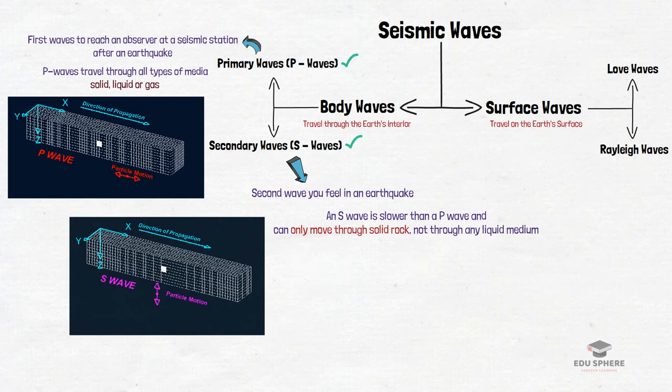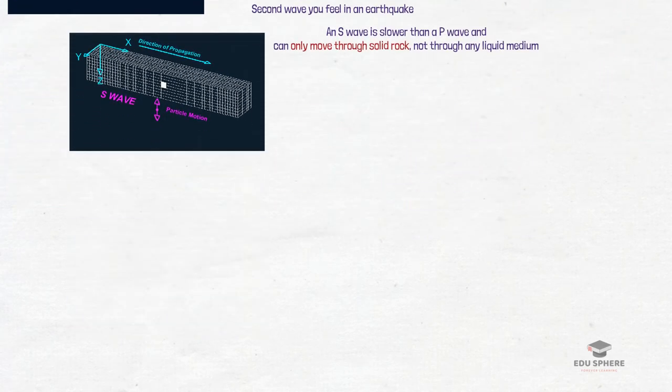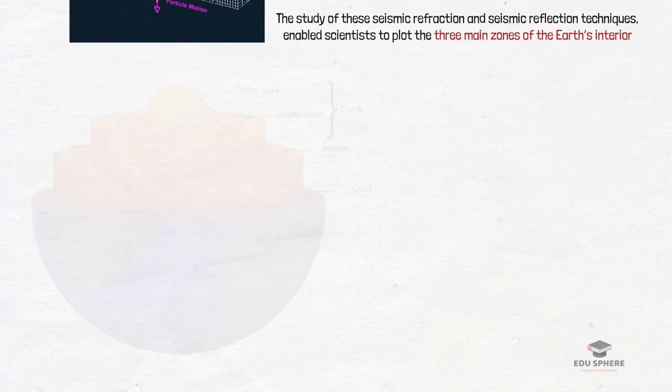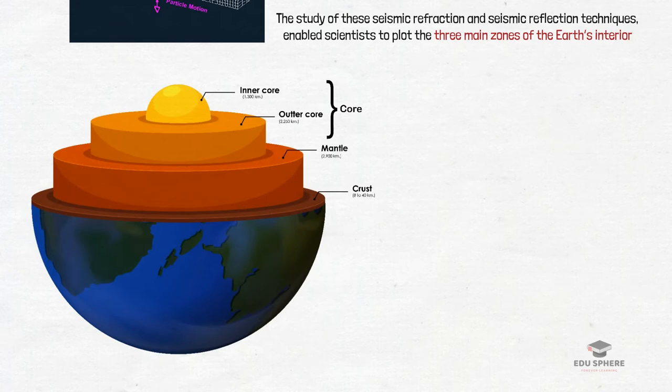Since the seismogram records the velocity of movement of the body waves through the Earth, we can tell what type of material they are traveling through. As the body waves travel through the Earth's internal layers, their speed changes causing the wave to bend. It was the study of these seismic refraction and seismic reflection techniques that enabled scientists to plot the three main zones of the Earth's interior.